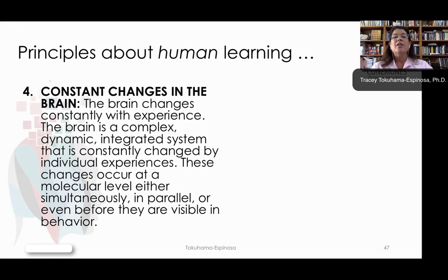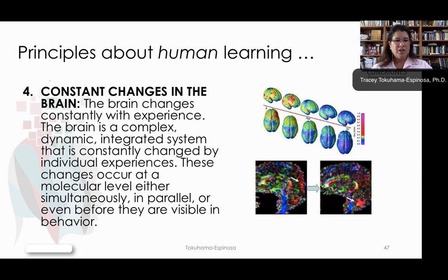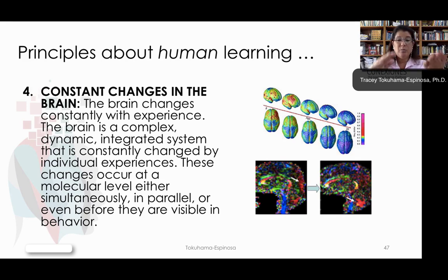Another concept has to do with the constant changes in the brain. Your brain is not static. At a molecular level, it is literally changing every single day. Sometimes these changes in the brain are complex and dynamic. It's an integrated system, and it's constantly changed by the individual's learning experiences. These changes at the molecular level can happen simultaneously and in parallel, or even before you can see the behavior.